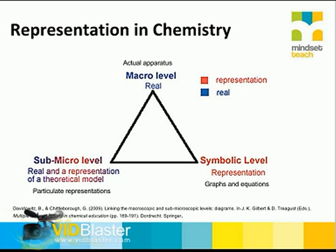We're going to a slide now that shows representation in chemistry — the triangle that John and I have spoken about in previous chemistry episodes, called Johnston's Triangle. It actually comes from researchers trying to find out why chemistry is so difficult to teach. Alex Johnston from Glasgow did a lot of really good work, and one of his findings was that one reason chemistry is so hard to teach is that teachers keep moving from one form of representation to another without saying they're doing it.